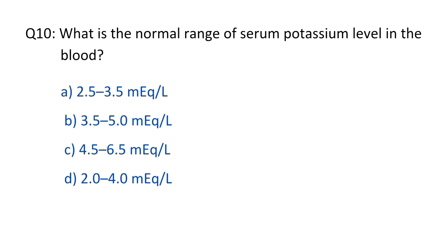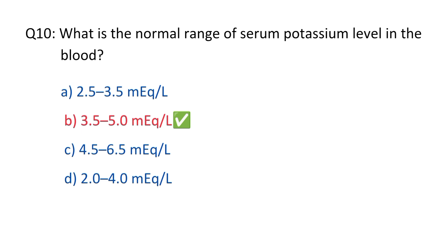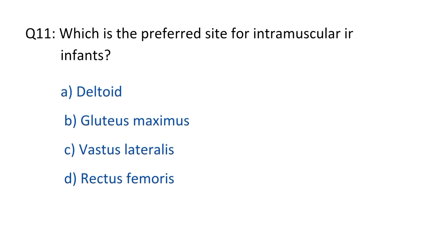Question No. 10. What is the normal range of serum potassium level in the blood? The right option is B, 3.5 to 5.0 mEq/L.